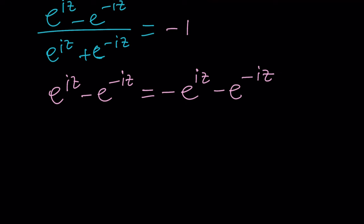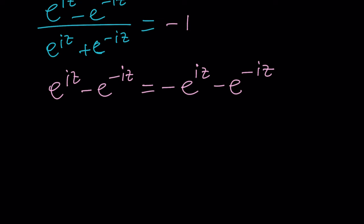Put the e to the iz's together? No, we're going to simplify this. These two cancel out if you add the same quantity to both sides, and these two you can bring together to get two times e to the iz equals zero. Divide by two.